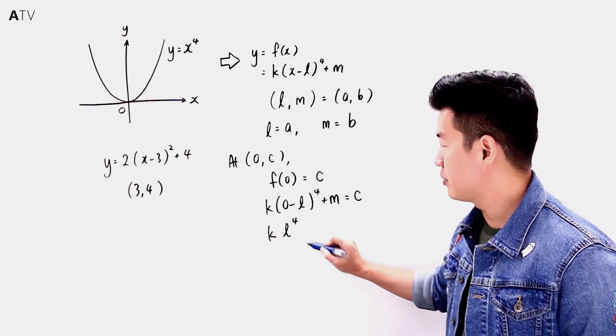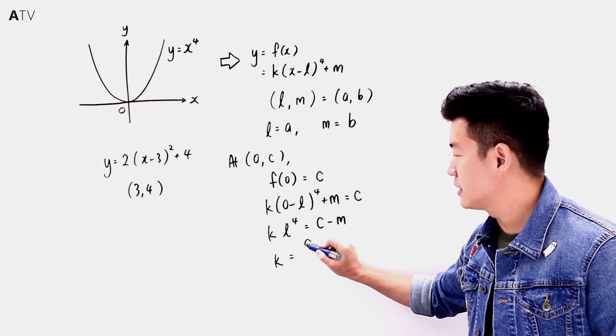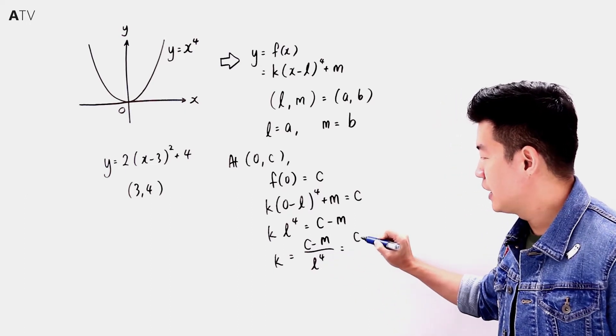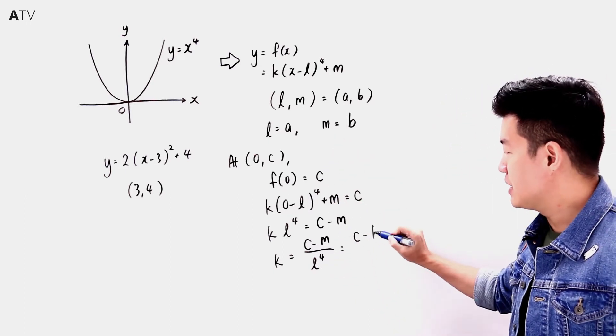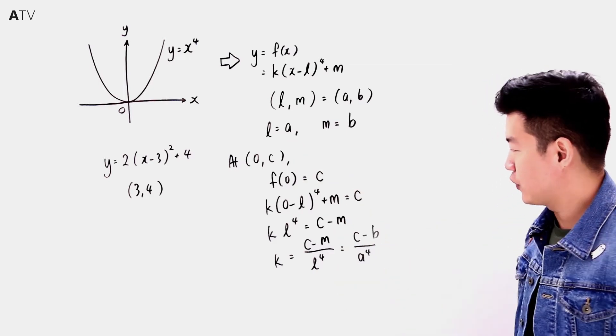So k = (c - m)/l⁴. Since m = b and l = a, we get k = (c - b)/a⁴.